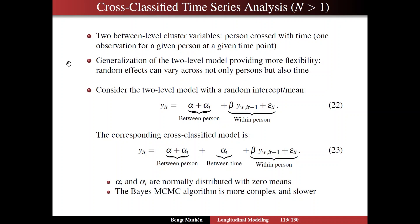It's a generalization of the two-level model that provides more flexibility in the modeling. I'd call this step number five, the last step in your analysis. Random effects can vary across not only persons but also across time. The two-level model with the random intercept can be written as a between-person quantity — the mean plus variation across that mean — and then the within-person part. The corresponding cross-classified model has the between-person but also between-time random effect, and the same within-person part.